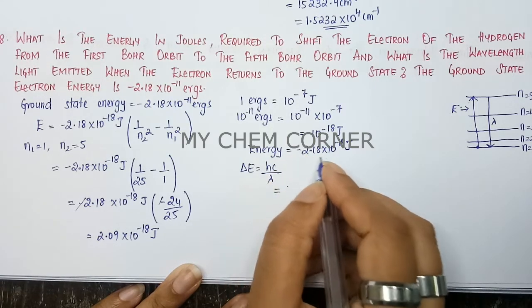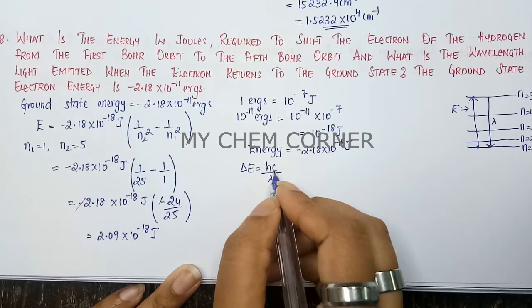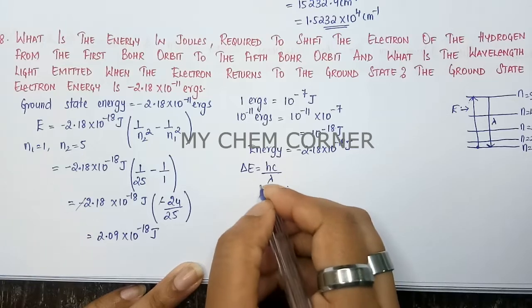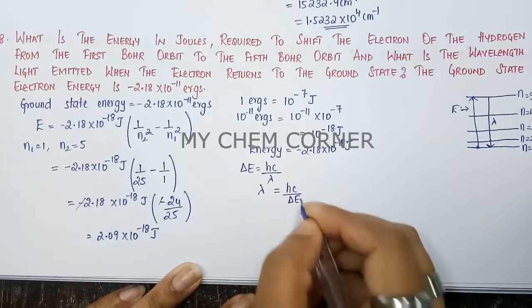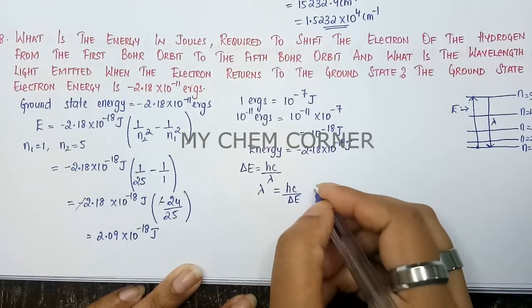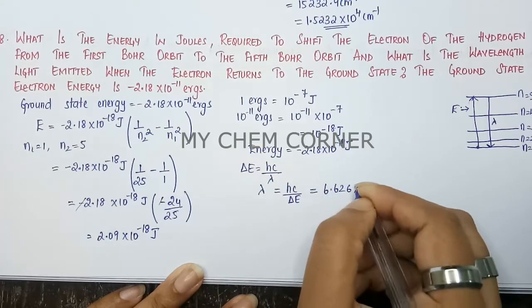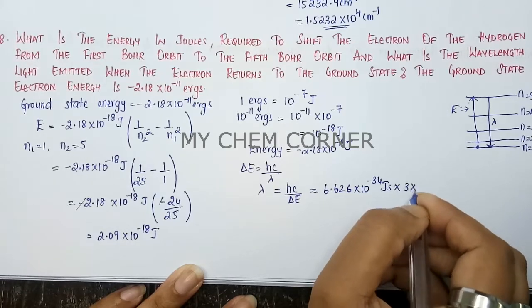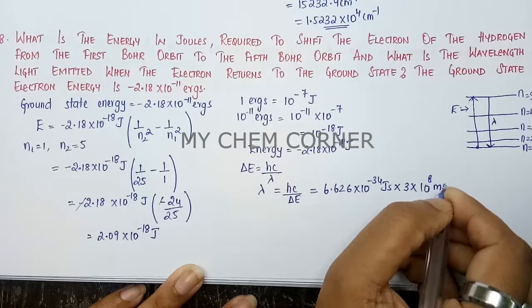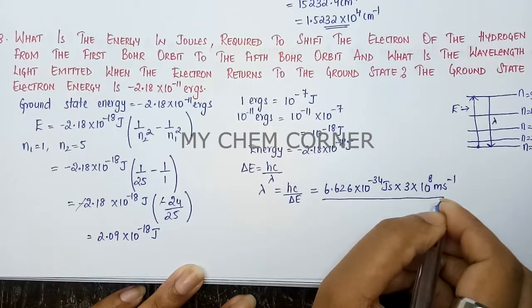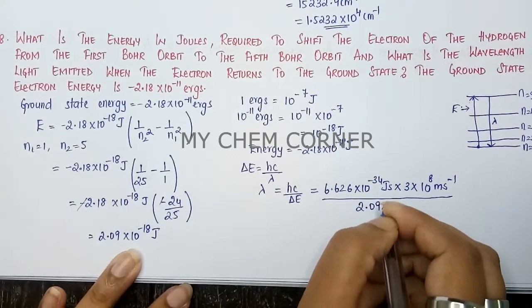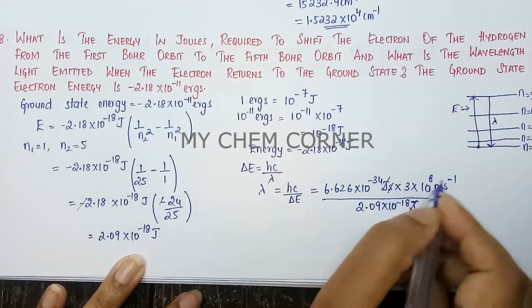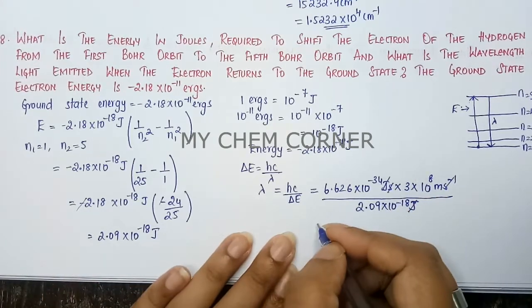Here, h = 6.626 × 10⁻³⁴ joule·second, and c = 3 × 10⁸ meter per second. Rearranging gives λ = hc/ΔE. Substituting: λ = (6.626 × 10⁻³⁴ × 3 × 10⁸) divided by 2.09 × 10⁻¹⁸. The joule units cancel, and seconds cancel with the inverse seconds.